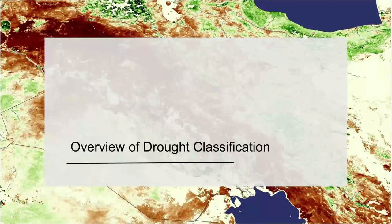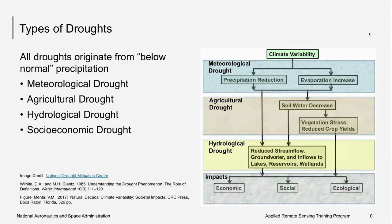Thank you, Amber, and welcome everyone. We will start with an overview of drought classification. As you can see, there are four major types of droughts: meteorological drought, agricultural drought, hydrological drought, and socioeconomic drought. As the figure shows on the right-hand side, they all start from climate variability. All droughts actually originate from below normal precipitation — below normal compared to a long-term average — which occurs over many years. Deviation from that decides drought conditions.